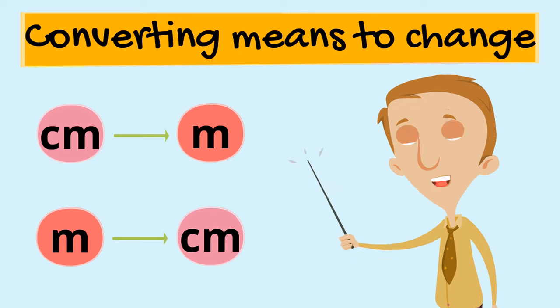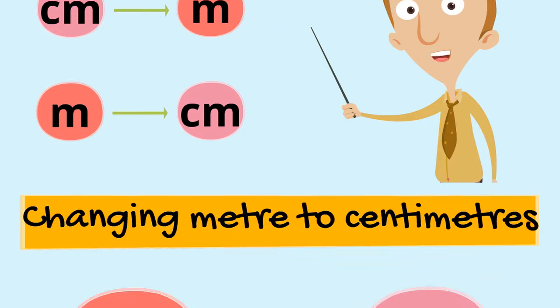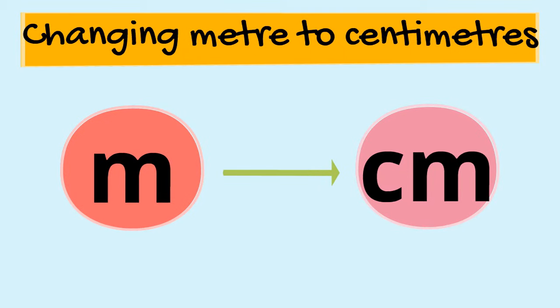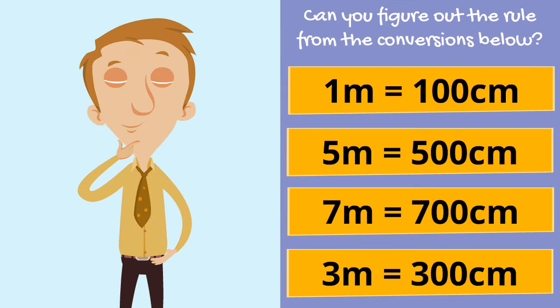Today we're going to be looking at how to convert centimeters into meters and how to convert meters back into centimeters. Let's start off by changing meters into centimeters. Have a look at the examples below. All of these are correct. Can you figure out what the rule for changing meters into centimeters is from the examples below? See if you can figure out what the same pattern in each of the questions is.